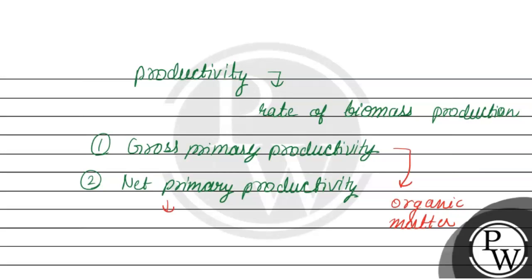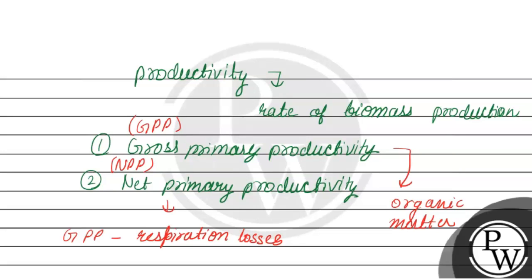Gross primary productivity stands for GPP, while NPP stands for net primary productivity. Gross primary productivity minus respiration losses is equal to net primary productivity.